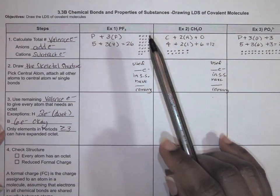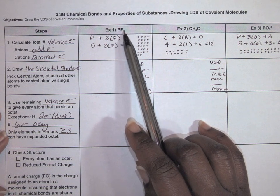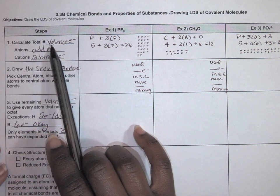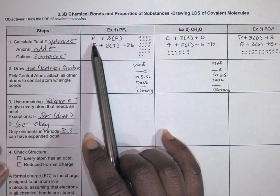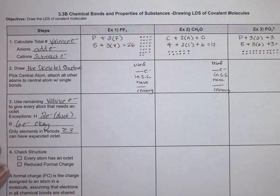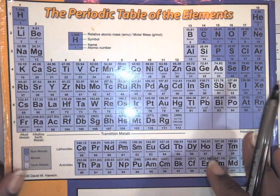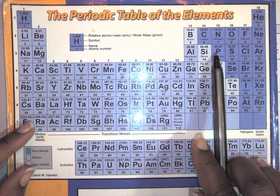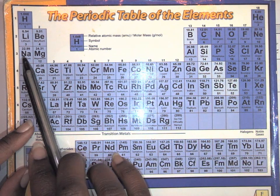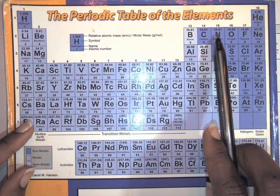We're going to walk through these steps with three examples. In the first example, we're given the chemical formula PF3, which is phosphorus trifluoride, and we're asked to draw the Lewis dot structure. Step one is to calculate the total number of valence electrons. We look on our periodic table and find phosphorus. We can tell by the group it's in how many valence electrons it has. Phosphorus is in group 15, so it has five valence electrons — remember, we skip the transition metals.